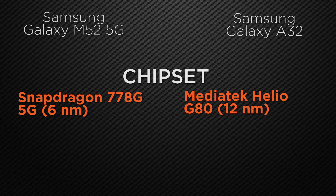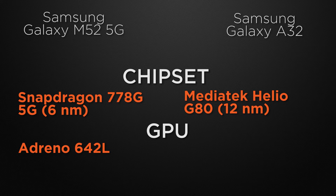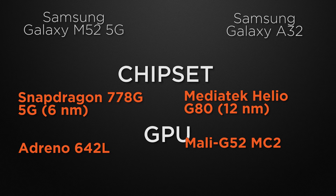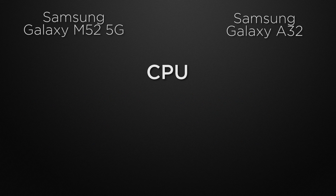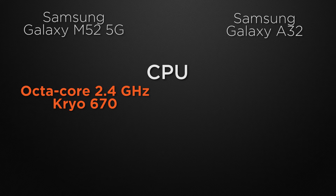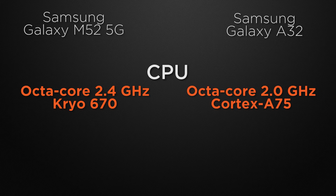About the GPU, the M52 is packed with the Adreno 642L whereas the A32 has the Mali G52, so the winner here is the M52 because it can give you more FPS in games. Regarding clock speed, the M52 can clock at 2.4 GHz on an octa-core Kryo chipset whereas the A32 can clock at 2.0 GHz on an octa-core chipset, so the winner here is the M52 because it has a faster clock speed.